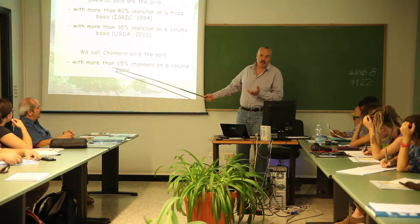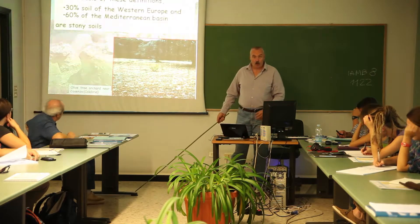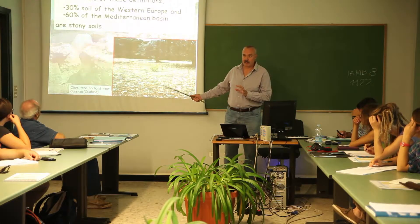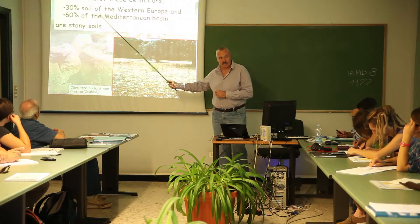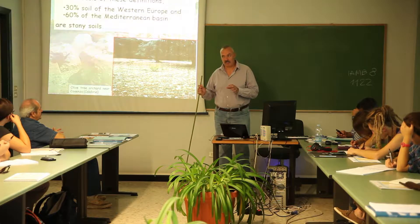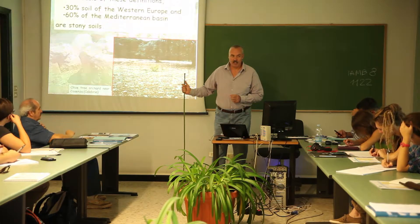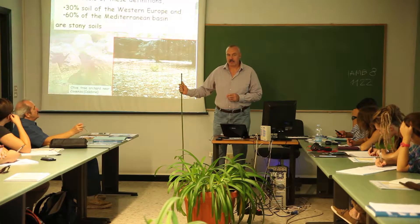We may define skeletal soils as those soils having more than 35–40% of rock fragments or skeleton. We call Chinese soils the soil that had more than 15% content. On the basis of this definition, 30% of Western Europe is made of stony soils. Here in the Mediterranean, the soils falling in the Mediterranean basin are 60% stony soils — a huge surface.